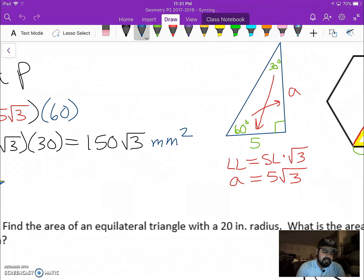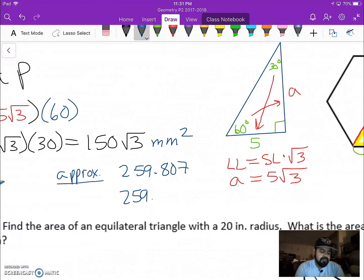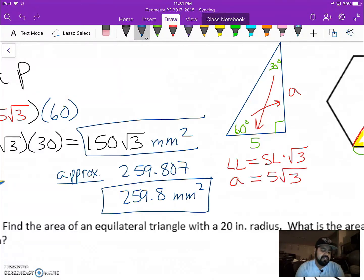Let me write that down. Now let's say I say in the problem round it to one decimal place. So this would be 259.8 millimeters squared. So either this answer or this one. Again, it will all depend on what I ask you to do. Either one.